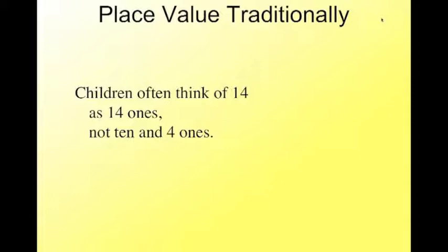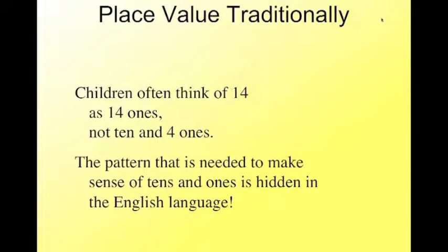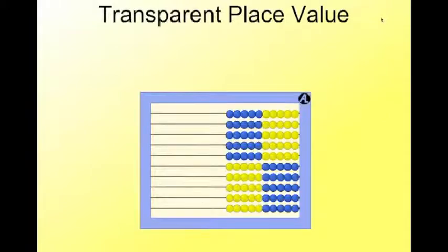Children often think of 14 as 14 1s, not as a 10 and 4 more 1s. The pattern that's needed to make sense of the 10s and 1s is hidden within our English language. So let's make place value more transparent. Let's unmask it and see how it works.